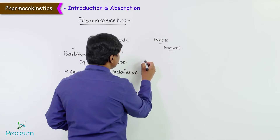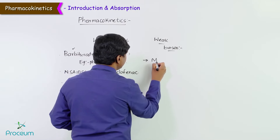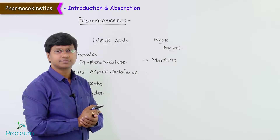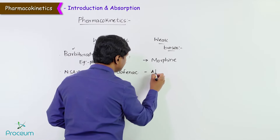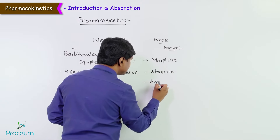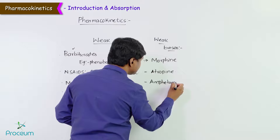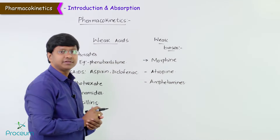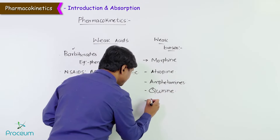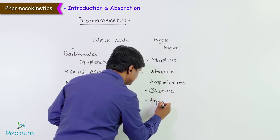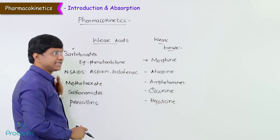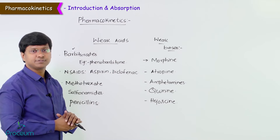Examples of weak bases include morphine, atropine, amphetamines, quinine, and hyoscine. These are your weak bases. So which of the following is a weak acid and which of the following is a weak base — these can be asked as multiple choice questions.